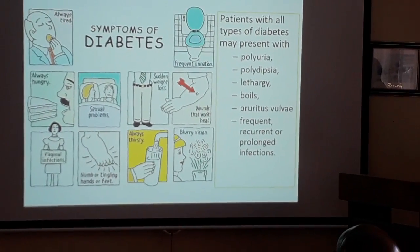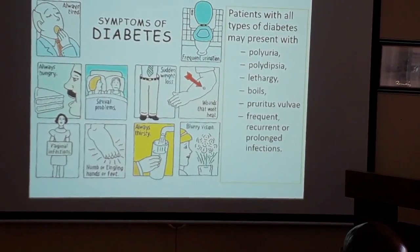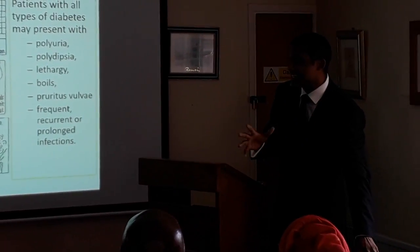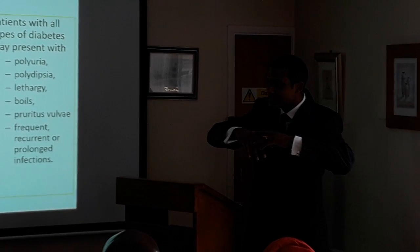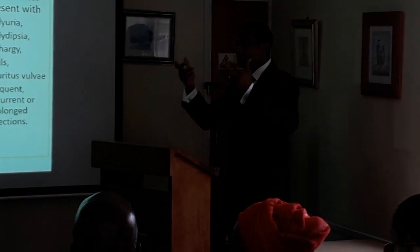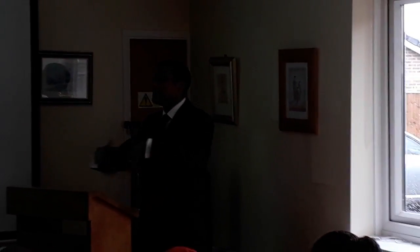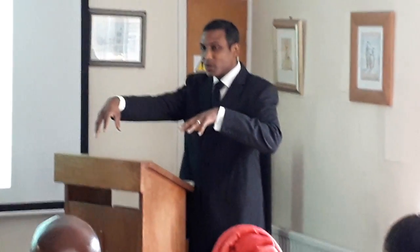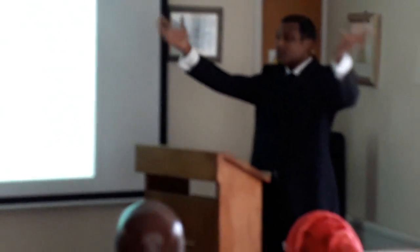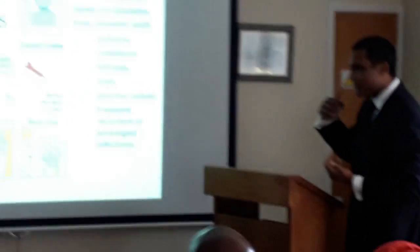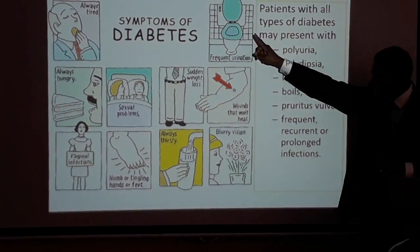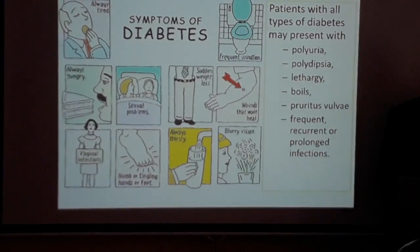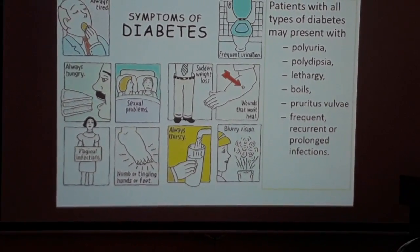Another symptom is always feeling thirsty. Glucose attracts water — if you put glucose on a countertop it becomes sticky and draws water. When blood passes through the kidneys, glucose is flushed through the nephrons and draws water with it, causing polyuria — frequent urination. If you urinate frequently, you also feel thirsty frequently, which is called polydipsia.